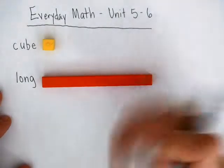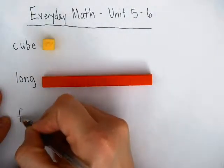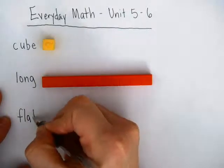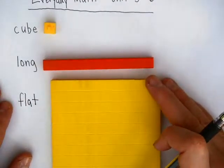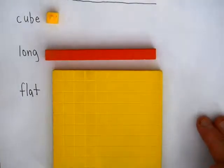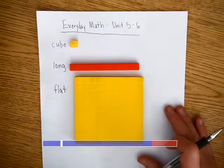The next word is a flat, and a flat is ten longs, or one hundred cubes. So I'll zoom out a little bit so you can see that.